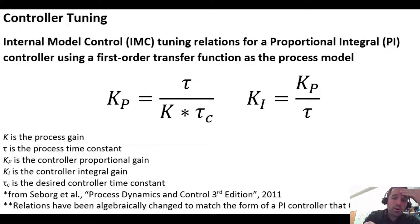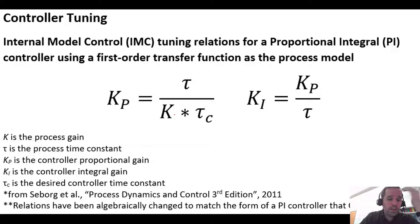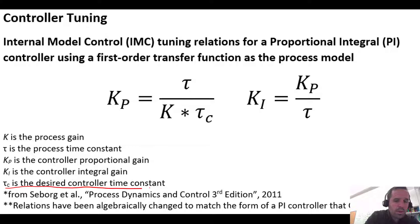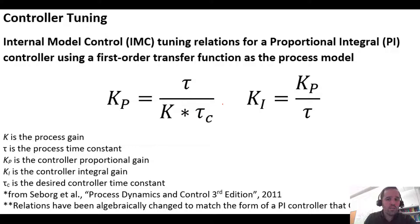To tune this, we first need to know our process parameters: the process time constant — for our valve we defined it as one minute — and the process gain, which is 0.1, with units of cubic meters per minute per valve position. Once we know these, our main design parameter is tau_c, the controller time constant. This is something we pick. Since our process has a time constant of one minute, we can make the process respond faster by setting tau_c to something like half a minute or a quarter of a minute.